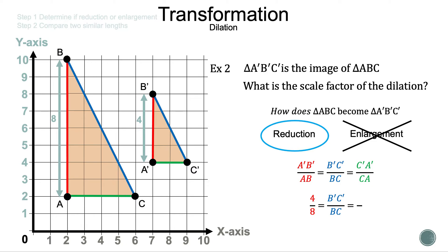Now let's find the green ratio. The length of C'A' by counting between the letters is two, and the length of CA is four. So the green ratio is two to four. We'll also note A'B' is four and AB is eight, giving a ratio of four to eight. Simplifying both ratios: four divided by eight and two divided by four both give one to two, or one-half. That is the scale factor for this example.